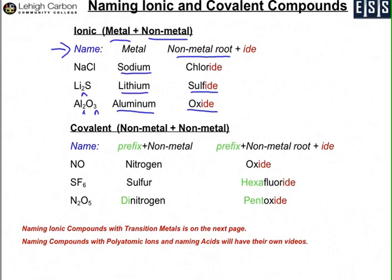The subscripts don't come into naming for ionic compounds. That's basically because you can look at the base charges of aluminum and oxygen and you know aluminum oxide must be Al2O3 — it's the only way it can be formed, so you don't need to show any representation of the subscripts.